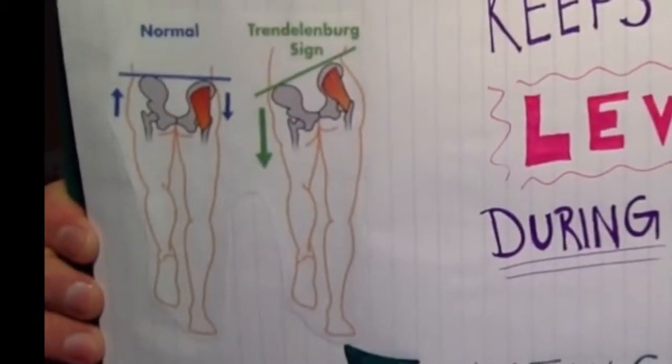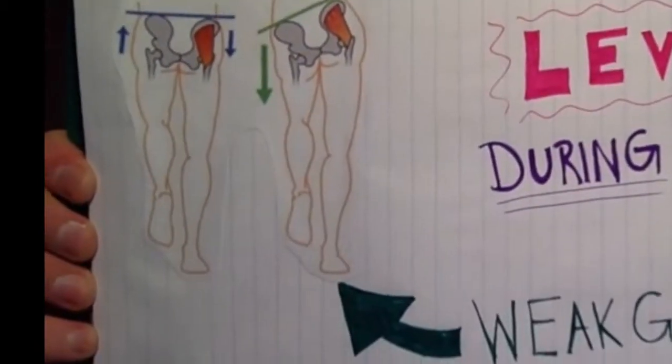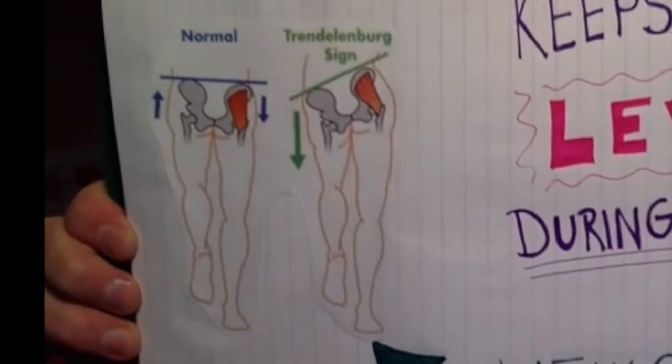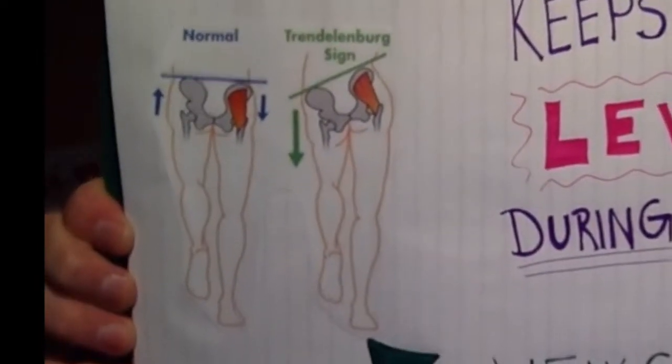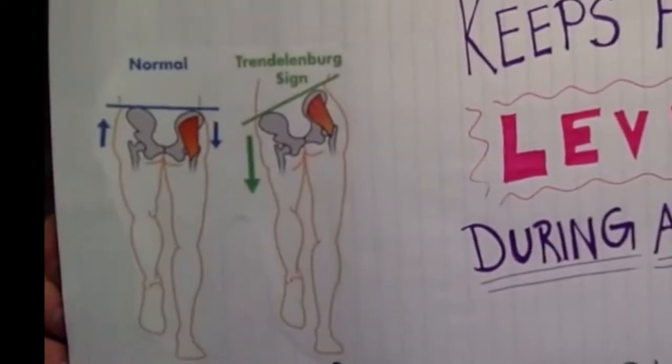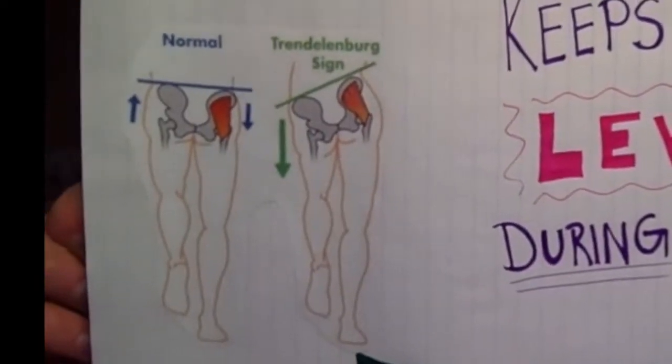This means when the patient stands on one leg, the pelvis will drop excessively on the side contralateral to the weakened gluteus medius muscle.